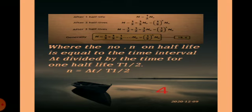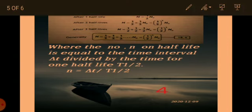The number of half-lives n is equal to the time interval Δt divided by the time for one half-life t½. So if you want to find the number of half-lives n, we use the formula: n = Δt / t½.